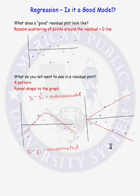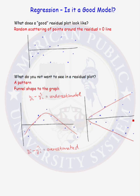The funnel shape could go in the opposite direction as well. Another funnel shape would be that the residuals are large for small x data and get very small as x gets greater. Again, the assumption that the standard deviation of our response variable is constant for all x values would be violated. So the two things you do not want to see in your residual plot are a pattern or a funnel shape to the graph. You want to see a random scattering of points.